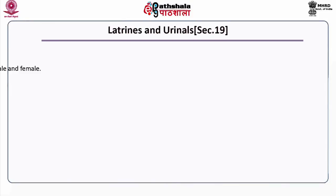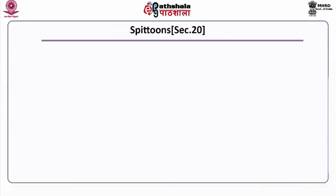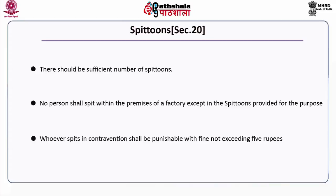Under Section 19, latrines and urinals: there should be separate facilities for male and female workers, with proper cleaning. Under Section 20, spittoons: there should be a sufficient number of spittoons. No person shall spit within the premises of a factory except in the spittoons provided for the purpose. Whosoever spits in contravention shall be punishable with a fine not exceeding 5 rupees.